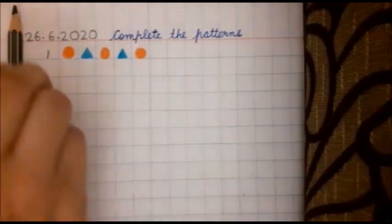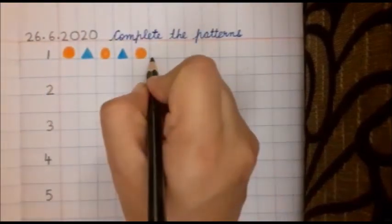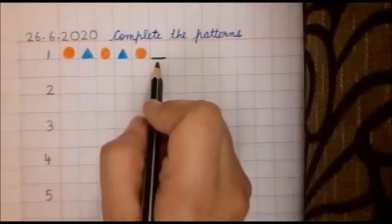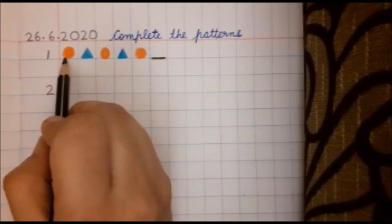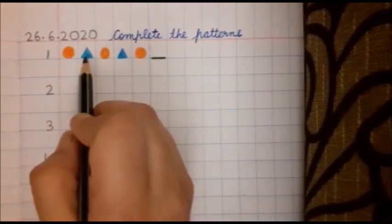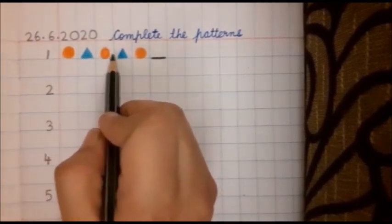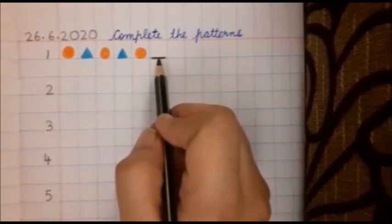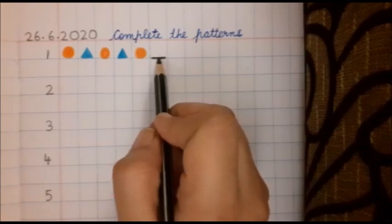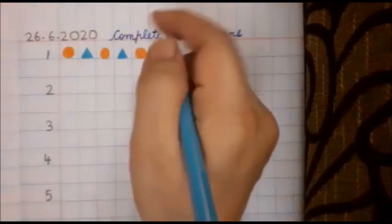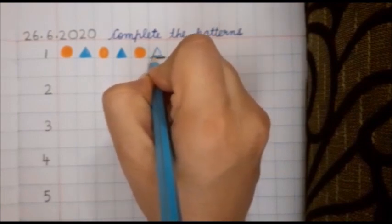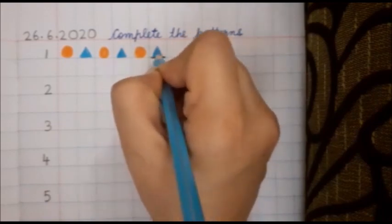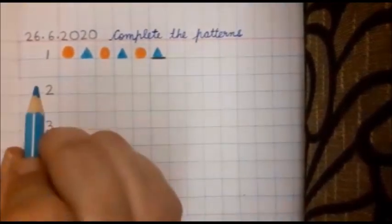Next orange circle. Now ma'am is putting a dash here. I have used my black colour pencil to draw a dash. See the pattern: circle, triangle, circle, triangle, circle. What will come here? What will come next? Yes, a blue triangle. Very good. This is our first pattern.